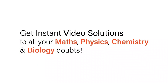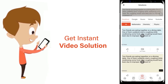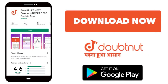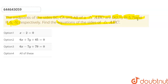With DoubtNet, get instant video solutions to all your maths, physics, chemistry and biology doubts — just click the image of the question, crop it, and get an instant video solution. Download the DoubtNet app today. Today our question is: the midpoints of the sides BC, CA, and AB of a triangle ABC are (2,1), (-5,7), and (-5,5) respectively. Find the equations of the sides of triangle ABC.